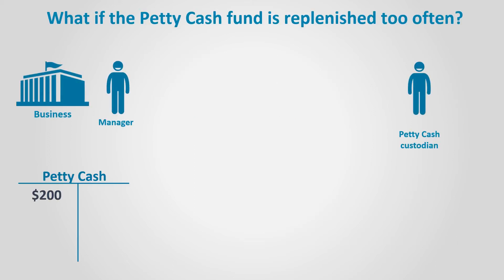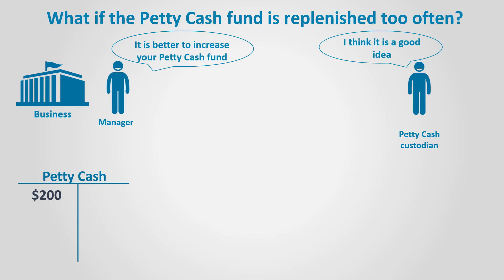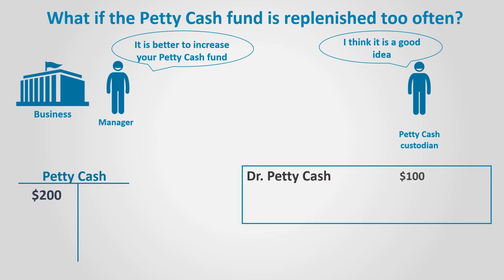If the Petty Cash Fund is replenished too often, this usually indicates that the amount in the Petty Cash Fund is too small. The business usually increases the amount by adding more cash to the custodian's Petty Cash account. Let's assume the business decided to increase the Petty Cash Fund by $100. The entry would be debit Petty Cash and credit cash for $100.